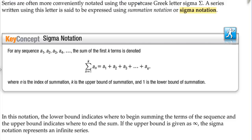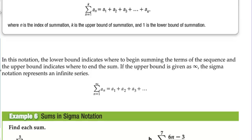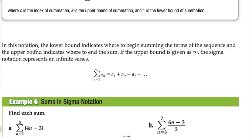Series are often more conveniently written using the uppercase Greek letter sigma. A series written this way is expressed using summation notation or sigma notation. For any sequence a sub 1, a sub 2, a sub 3, ..., the sum of the first k terms is denoted by sigma notation with a sub n, where n is the index of summation, k is the upper bound, and 1 is the lower bound. If the upper bound is given as infinity, the sigma notation represents an infinite series.